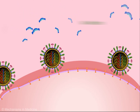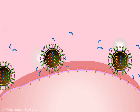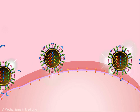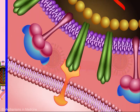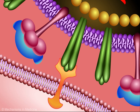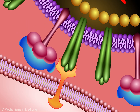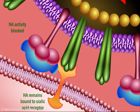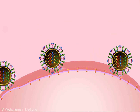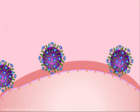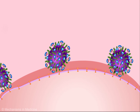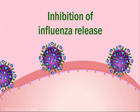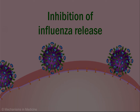Neuraminidase inhibitors disrupt the release of influenza virus from the host cell. These neuraminidase inhibitors mimic neuraminidase's sialic acid binding site. When introduced, they bind neuraminidase on the budding viruses, blocking its enzymatic activity. Thus, influenza virus remains bound to the host cell's surface and is unable to spread infection.